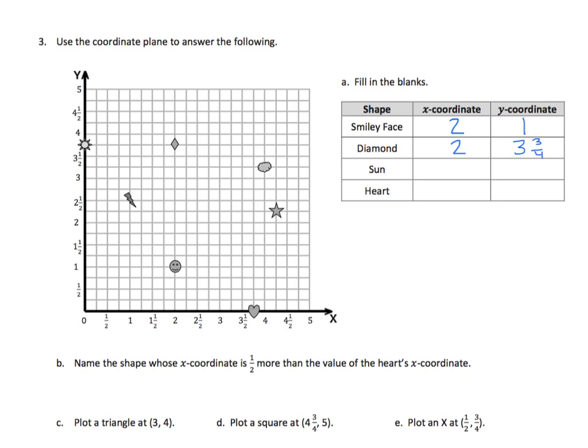The sun is directly on the y-axis. So it has an x value of zero. And again, we can go up that y-axis. And we see, just like the diamond, we are halfway between three and a half and four. And that is, again, three and three-fourths.